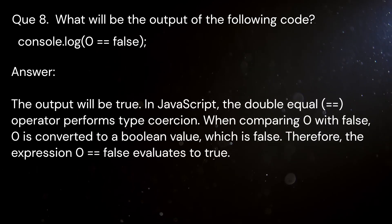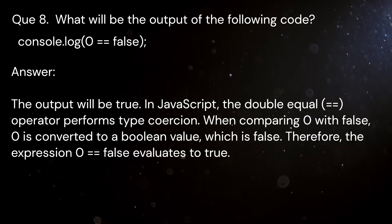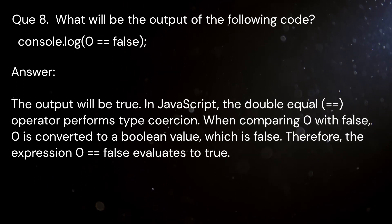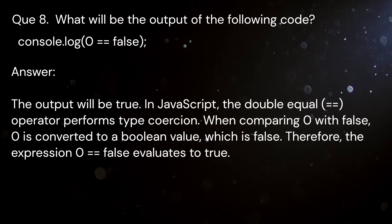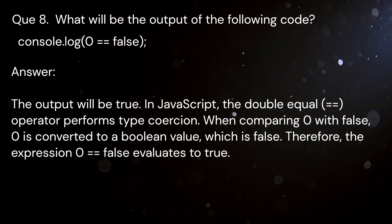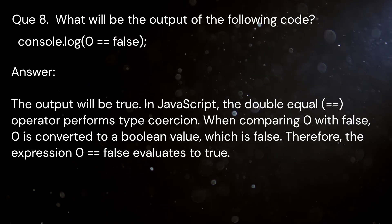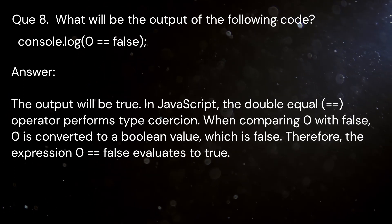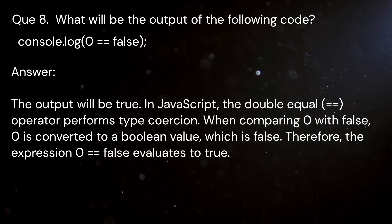Question 8: What will be the output of the following code? console.log(0 == false). Answer: The output will be true. In JavaScript, the == operator performs type coercion. When comparing 0 with false, 0 is converted to a Boolean value, which is false. Therefore, the expression 0 == false evaluates to true.